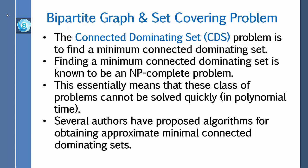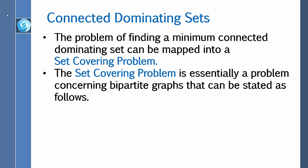The connected dominating set problem is to find a minimum connected dominating set. Finding a minimum connected dominating set is known to be an NP-complete problem. This essentially means that this class of problems cannot be solved quickly, that is, in polynomial time. Several authors have proposed algorithms for obtaining approximate minimal connected dominating sets.